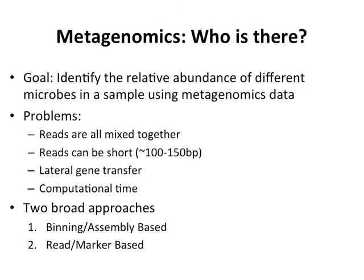Lateral gene transfer — both ancient and more recent — can really complicate taxonomic profiles, because if you think a read comes from a gene in one organism but it was recently transferred, that makes taxonomic profiling hard. Additionally, most of this data management is fairly large, so computational time can make things difficult when doing a lot of similar analyses.